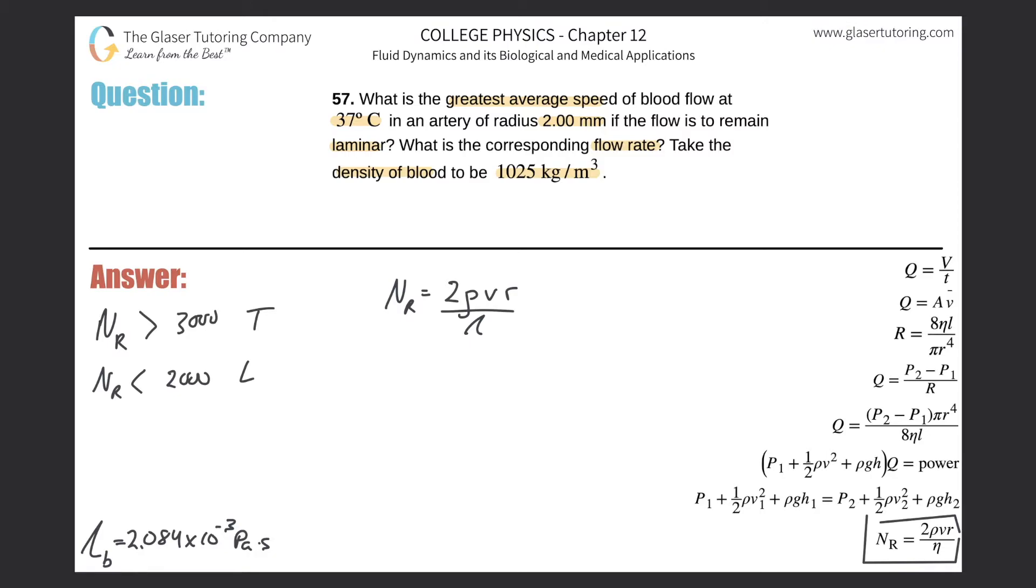We're talking about blood. We have all the values we need—we just have to look up the viscosity of blood at 37 degrees Celsius. We want to find the greatest velocity while remaining laminar, so the upper limit of laminar flow is a Reynolds number of 2000.